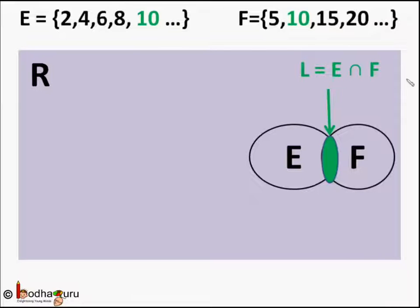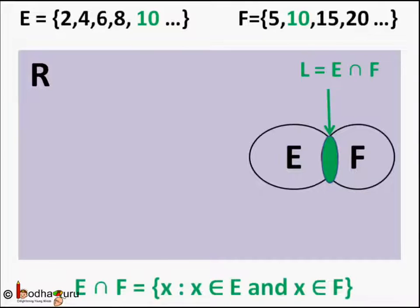So L is the intersection of set E and F. We write it like this E intersection F. The intersection symbol is written like an inverted U. So we say intersection of sets E and F is the set of all elements which are common to both the sets. Remember, common to both the sets means X belongs to E and X also belongs to F.